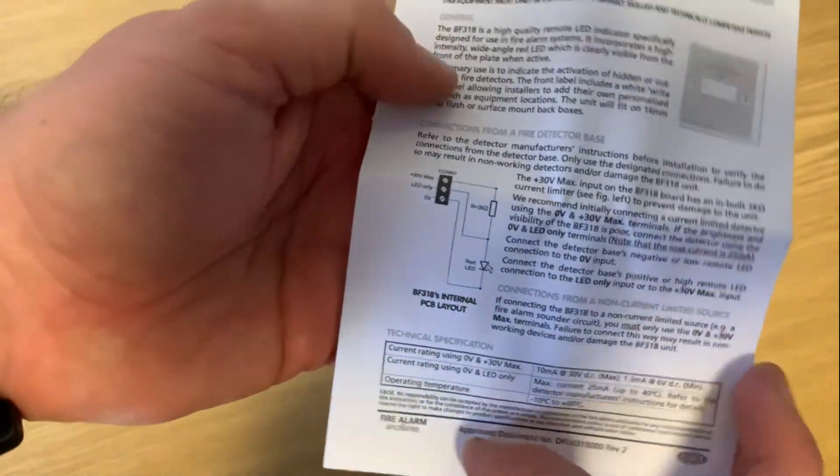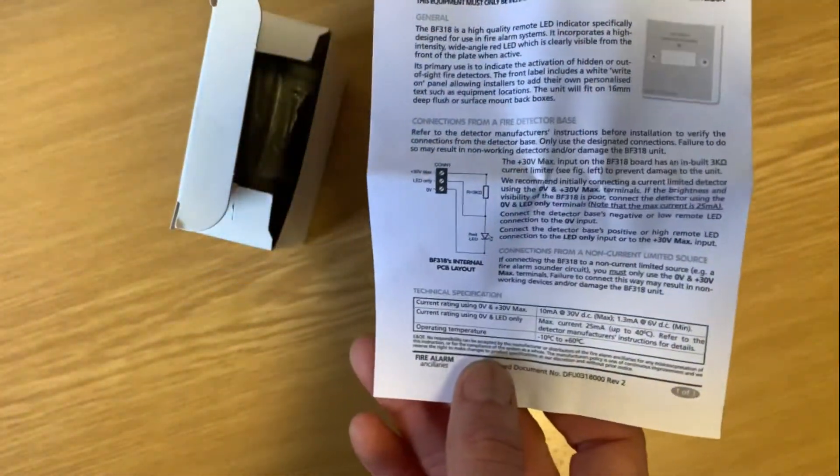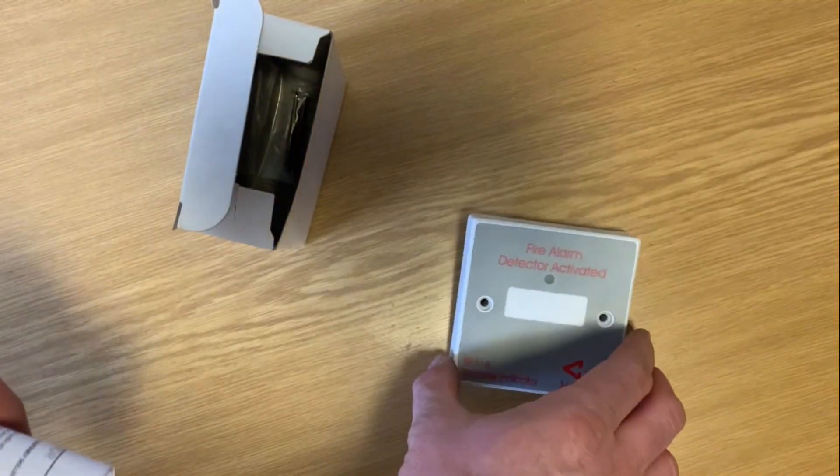the installation leaflet and a couple of screws in the box. It's all fairly straightforward. That's the remote indicator.